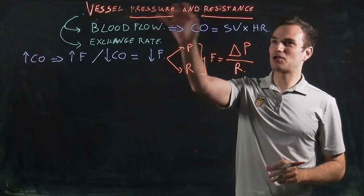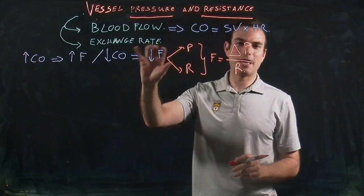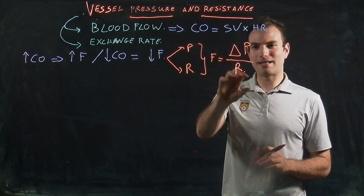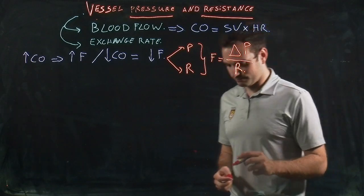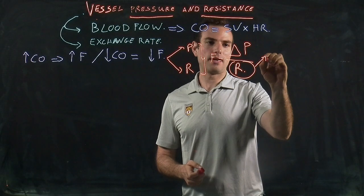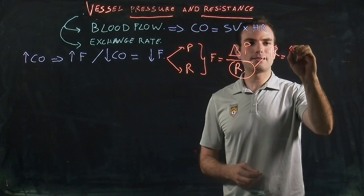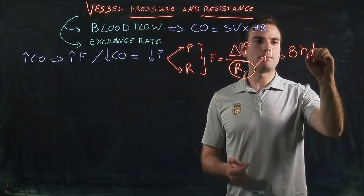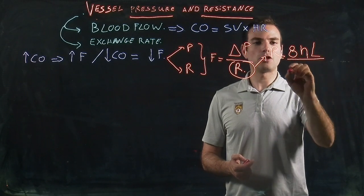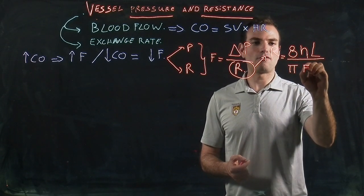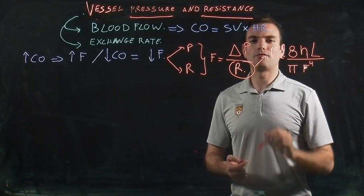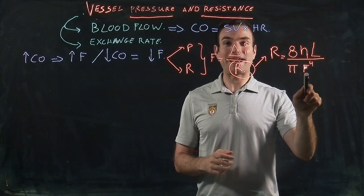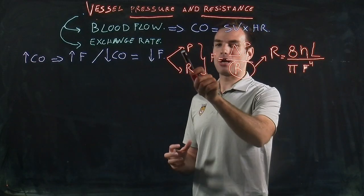Pressure and resistance are really important to regulate blood flow, and therefore the exchange rate at the capillaries. Now we are going to look at the different concepts that determine resistance and therefore determine blood flow. Resistance is equal to 8 multiplied by nu — which is the viscosity of the fluid, in this case the viscosity of the blood — multiplied by the length of the blood vessel, divided by pi multiplied by the radius to the fourth. So vessel length and vessel diameter determine resistance and therefore blood flow.